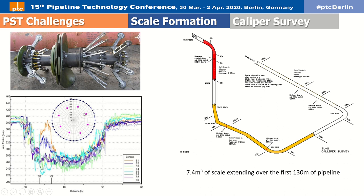The scale deposit thickness decreases further down the riser. Where the fluid temperature drops due to heat exchange with seabed water, a radius plot shows the extent and distribution of scale deposits from the bottom of the riser through the dogleg. A minimum bore of 640 millimeters — a bore reduction of 132 millimeters or 17% — occurred, and then again a localized reduction with a minimum bore of 630 millimeters over a length of almost 1 meter was observed.